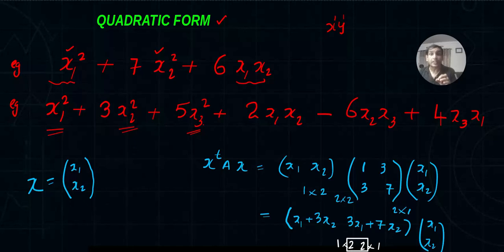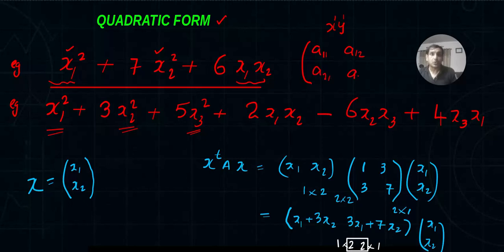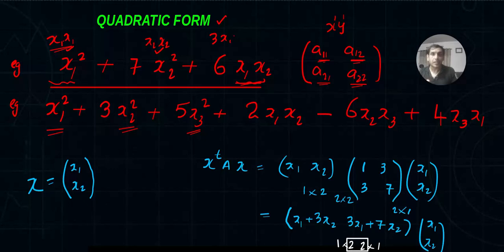For exam purposes, the first thing you need to understand is that every quadratic form can be changed into matrix form, and it is very simple. For two variables, we use a 2x2 matrix: a11, a12, a21, a22. The first row first element, first row second element, second row first element, second row second element. This quadratic form looks like x1 multiplied by x1, x2 multiplied by x2, and 3x1x2 plus 3x2x1.